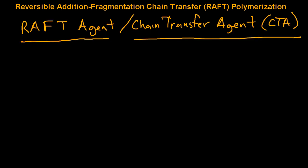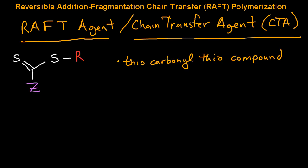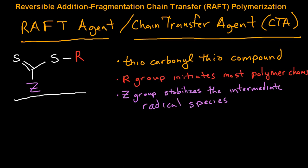The most important aspect of the RAFT technique is the RAFT agent, or chain transfer agent, often labeled as CTA for short. The RAFT agent is typically a thiocarbonyl-thio compound. The RAFT agent consists of two important groups: the R group, which will initiate most of the polymer chains within the system, and the Z group, which stabilizes the intermediate radical species.